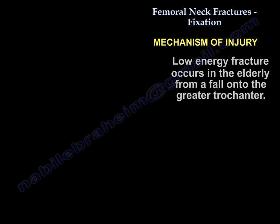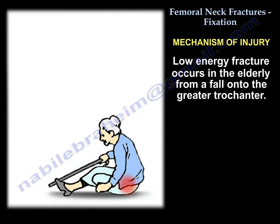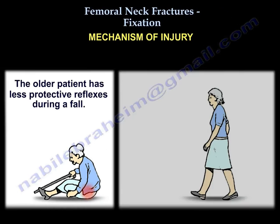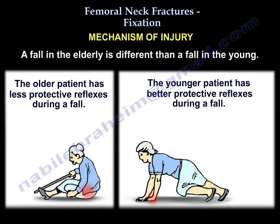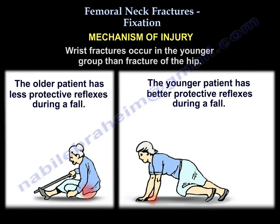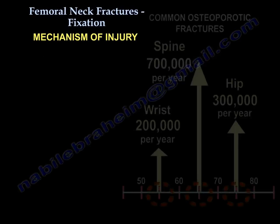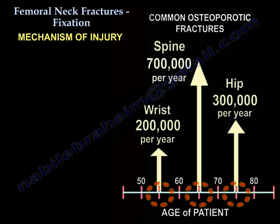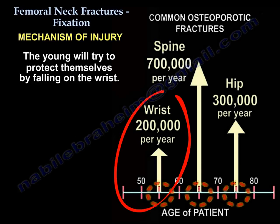Mechanism of injury: Low energy fracture occurs in the elderly from a fall onto the greater trochanter. The fall in the elderly is different than a fall in the young — wrist fractures occur in a younger group, followed by spine fractures, then hip fractures. The young will try to protect themselves by falling on the wrist.